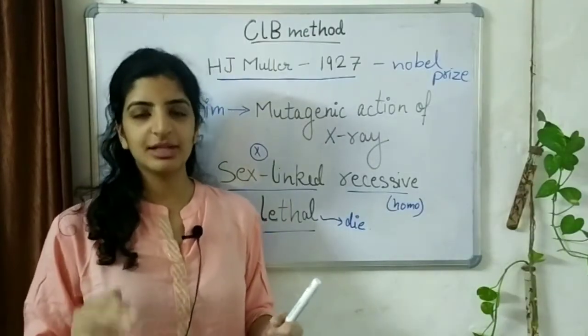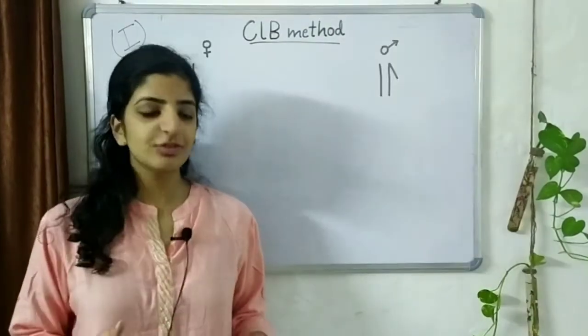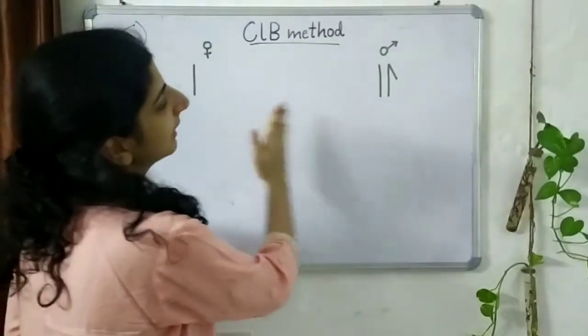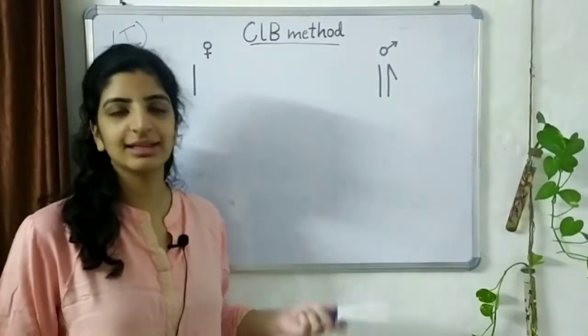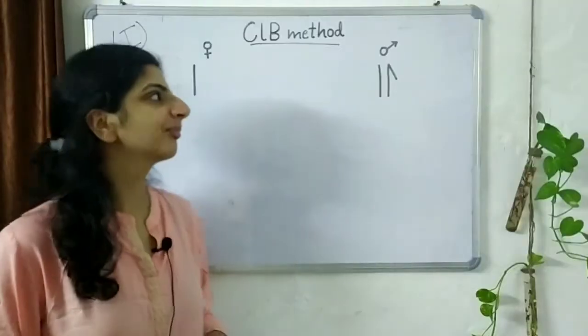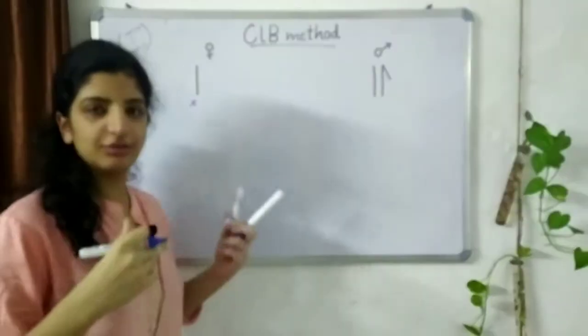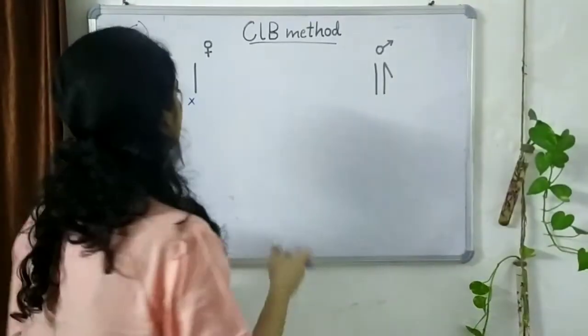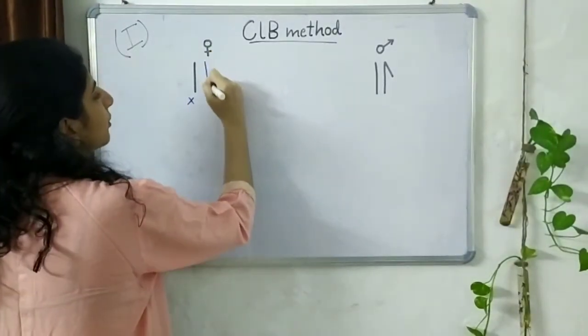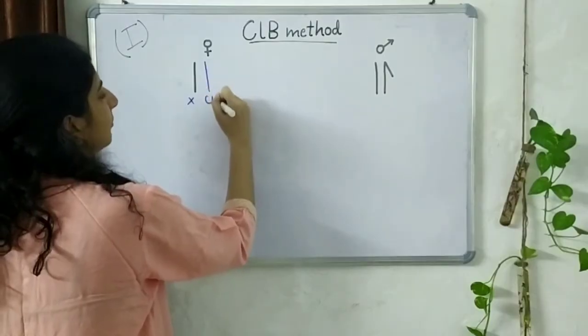CLB method is based on two crosses. In the first cross, we have a drosophila female and a drosophila male. We are considering that organism to be drosophila. In the female, we have one normal X chromosome and we know that a female has to be XX. The second chromosome, however, is a CLB chromosome.